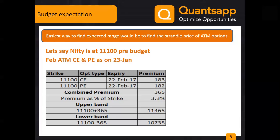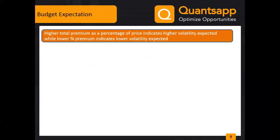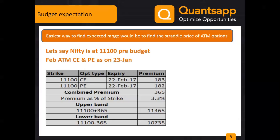At 3.3% the combined premium is above average but not extreme — on expected lines. A higher total premium percentage indicates high expected volatility; a lower percentage indicates low expected volatility. So on average we are expecting a 3% movement up and down, giving a band of approximately 11,500 to 10,700. When taking a strategy, always look at the current ATM option combined premium first, then decide your course of action.